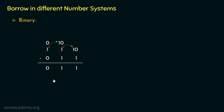Notice one thing: when we borrowed this 1 from that place, did we actually borrow 1? Not really — we actually borrowed 10. With that 10, we added the 0 of the least significant bit. Let me clarify with the help of place values. The place value of the least significant bit is 2 raised to the power 0, whereas the place value of the next bit is 2 raised to the power 1. When we borrow from the 2¹ place, we are making the LSB — the least significant bit — a 2-bit number.